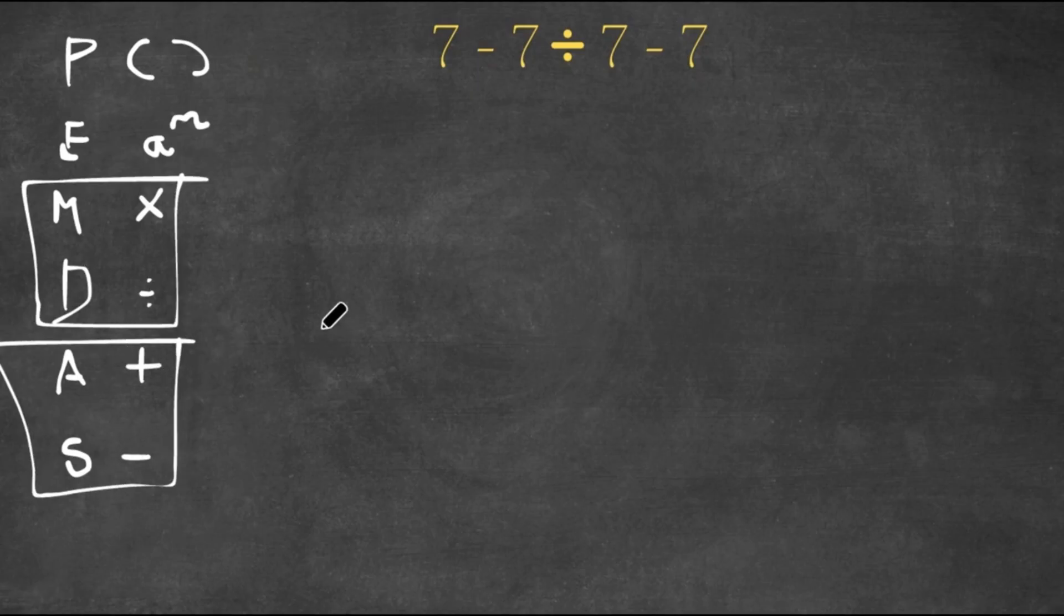So whichever one comes first, for example if I had 6 minus 3 plus 2, because subtraction comes first here when going from left to right, I would do subtraction first, so I would do 6 minus 3, and then 3 plus 2 is 5.